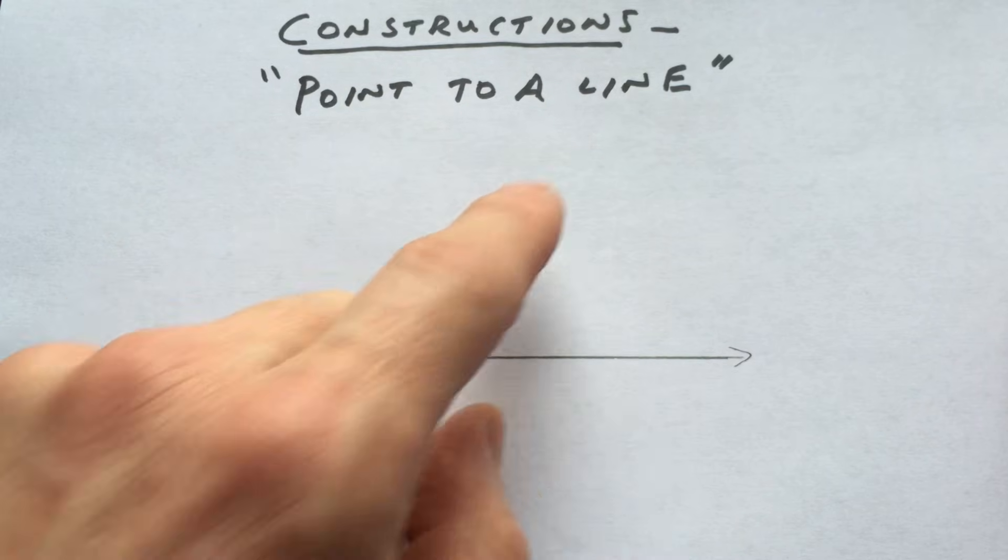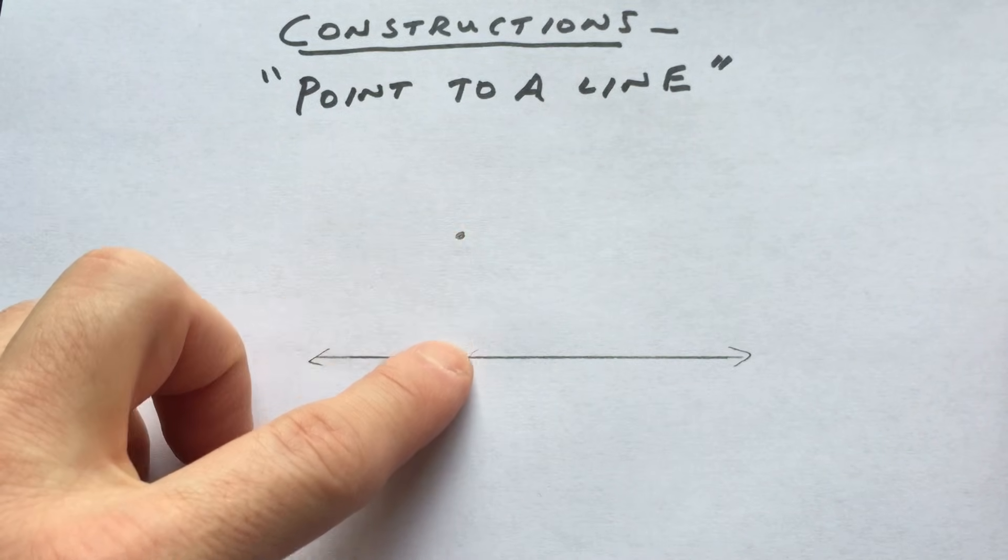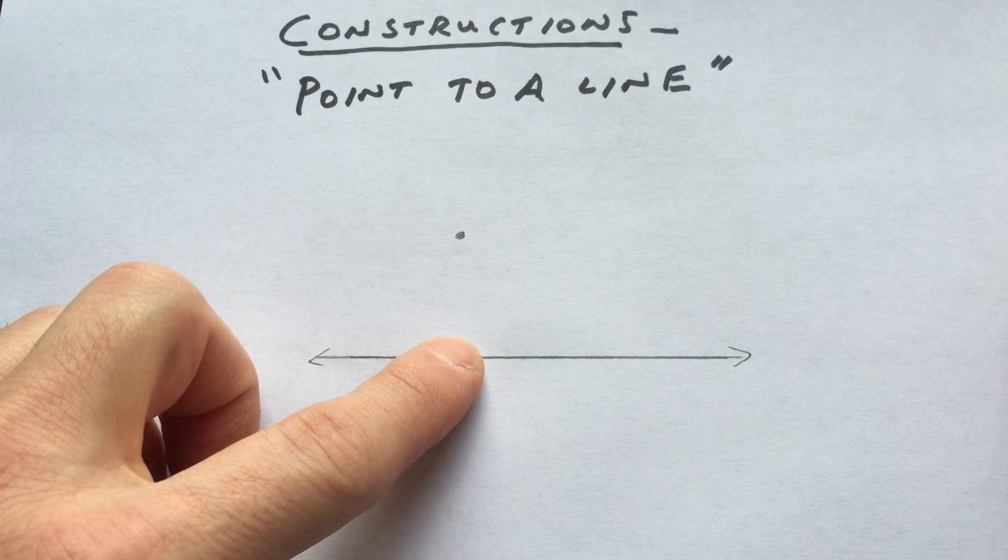When you measure the distance from a point to a line, you want to measure the shortest distance, the perpendicular distance.